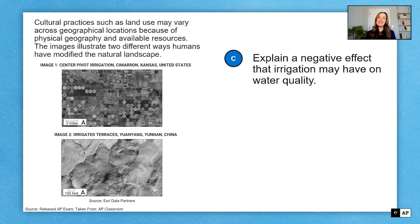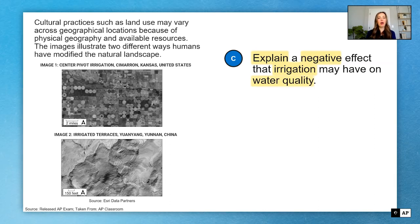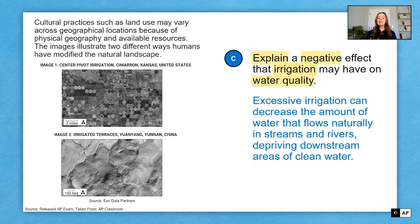So it says, explain a negative effect that irrigation may have on water quality. Key verb here being explain. I want to have a why or a how in my answer. And I'm looking at the negative effects that irrigation may have on water quality. So while I don't have to refer back to the images, I might be thinking about what I know about things like center pivot irrigation, as illustrated in that first image, when I write my answer. So here are some things you could talk about for part C. Again, a real answer would be longer, but did your answer sound somewhat like this? Are you on the right track? Use your answer to compare with mine and see how you're doing. Let's check off part C and move on to part D.